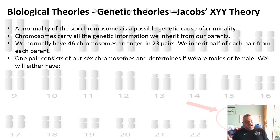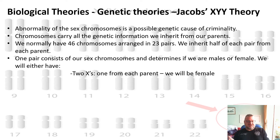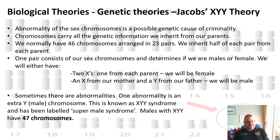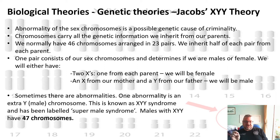We're either going to have two X chromosomes — an X from one parent and an X from another — in which case you'll be female. Or you get an X chromosome from the mother and a Y from the father, in which case you turn out to be male. Sometimes there are abnormalities, and one abnormality is that some people have an extra Y, so they have an extra male chromosome. This is known as XYY syndrome, and it's been labelled 'super male syndrome.'